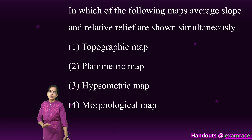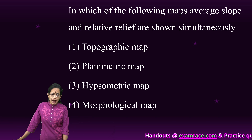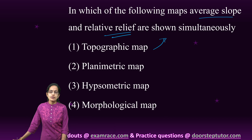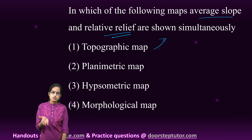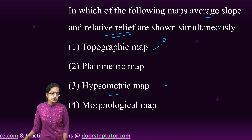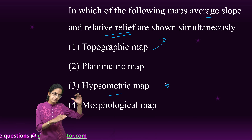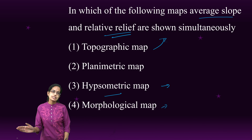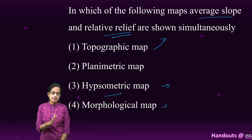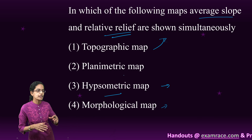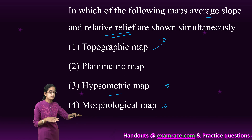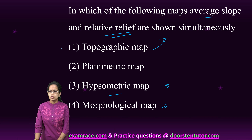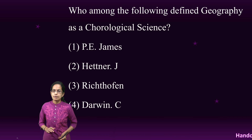The next question asks which map shows average slope and relative relief simultaneously. Topographical map shows both relative relief and average slope. Hypsometric map shows elevation of terrains using colors. Morphological map represents only surface forms, and planimetric map deals with horizontal positions of features. So topographical map is the correct answer here.